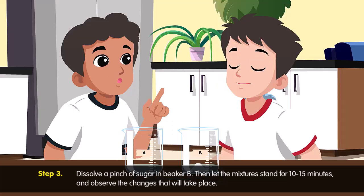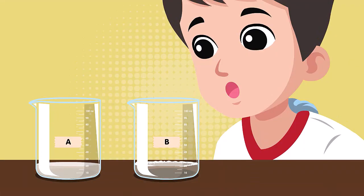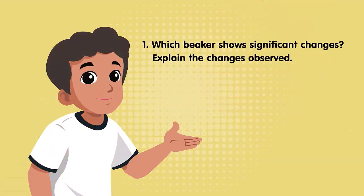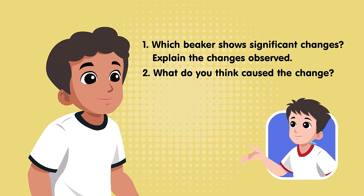Now dissolve a pinch of sugar in beaker B, then let the mixture stand for 10 to 15 minutes and observe the changes that take place. Which beaker shows significant changes? Explain the changes you observe. What do you think caused the change?